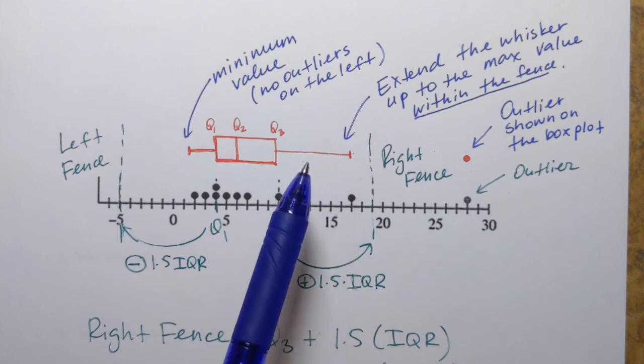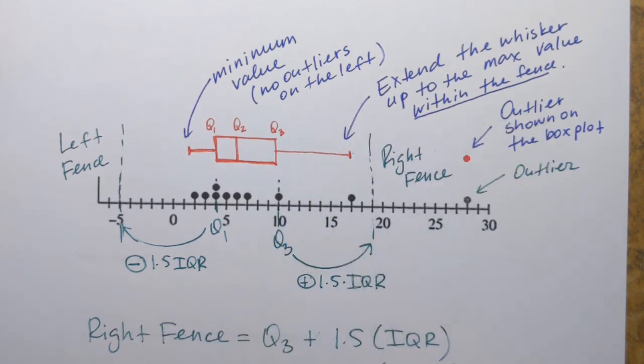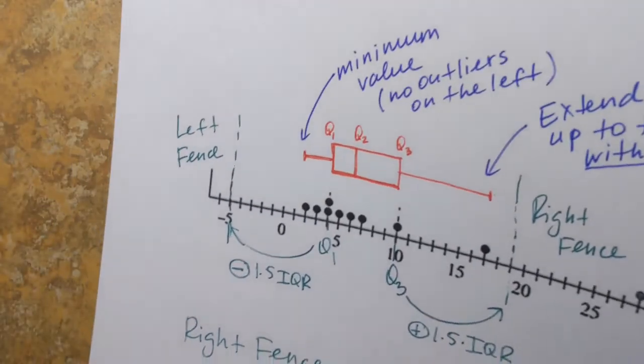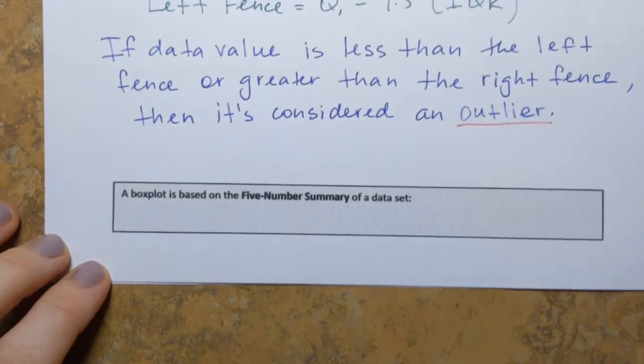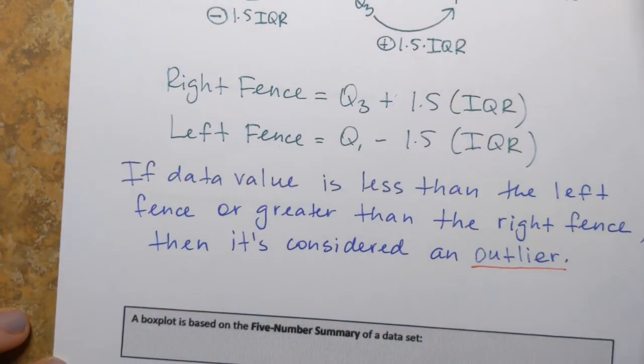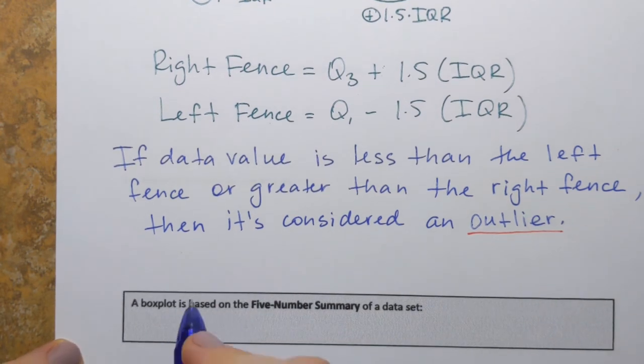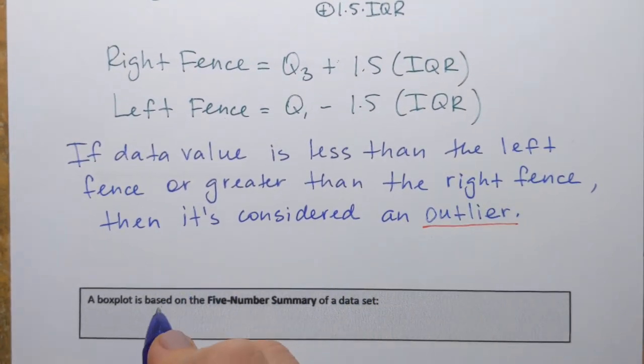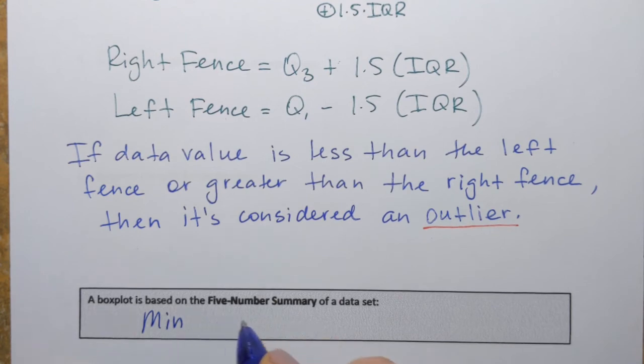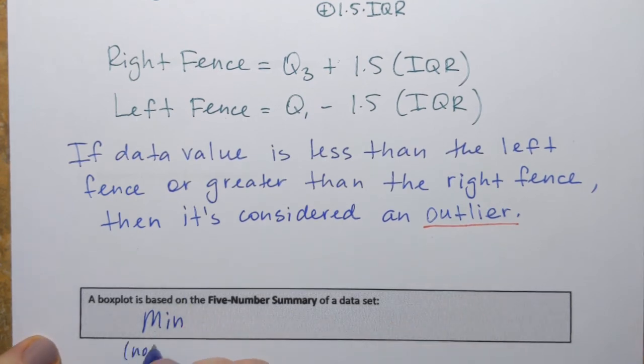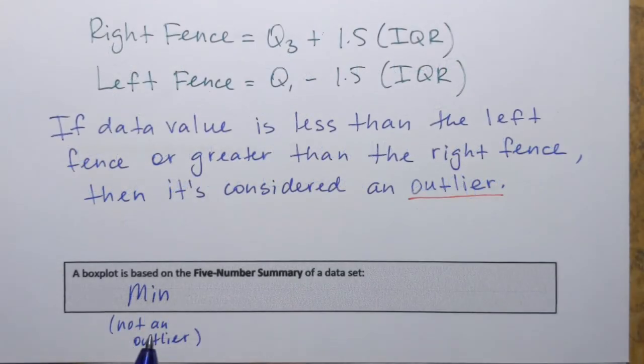So it's just five numbers that when we write them, they tell us quite a lot about the data set. So let's write this down here. So I'm going to say a box plot is based on the five number summary of a data set, and they are in order. Minimum value, but not an outlier. We exclude the outliers from the data set because they influence the measures of the data set. So minimum, then it's Q1,